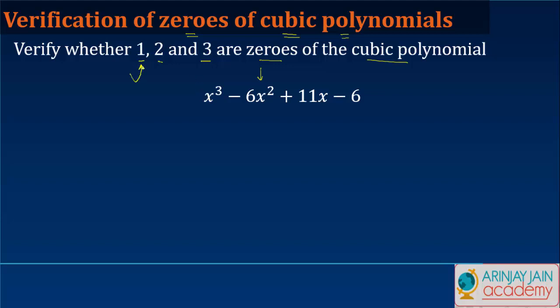Now if these numbers are zeros, let's call this P(x). If 1, 2, and 3 are zeros of the given polynomial P(x), then the value of P(1), P(2), and P(3) should be equal to 0.